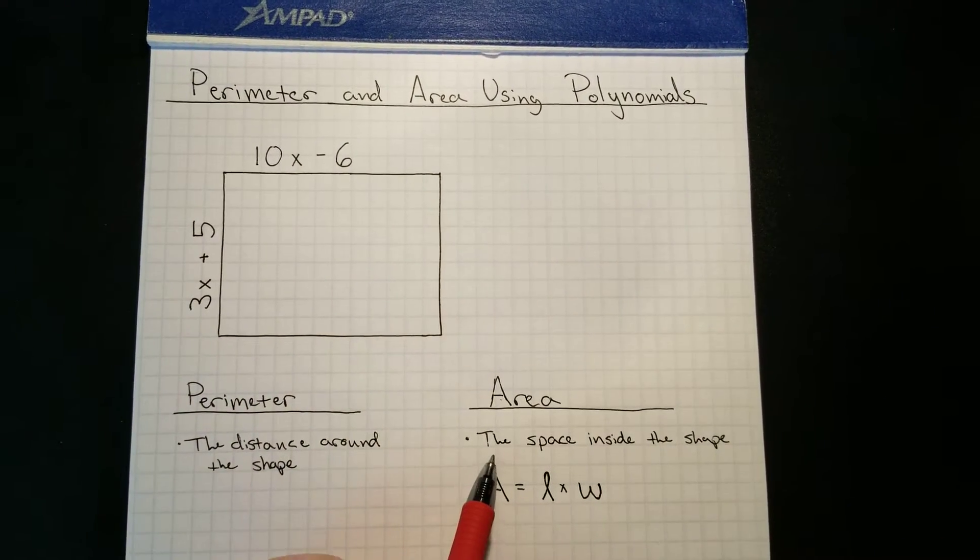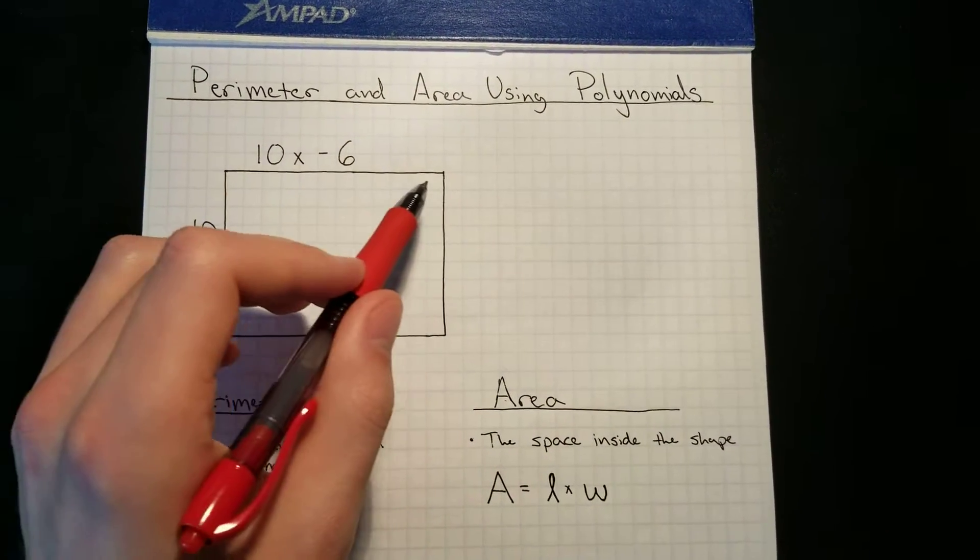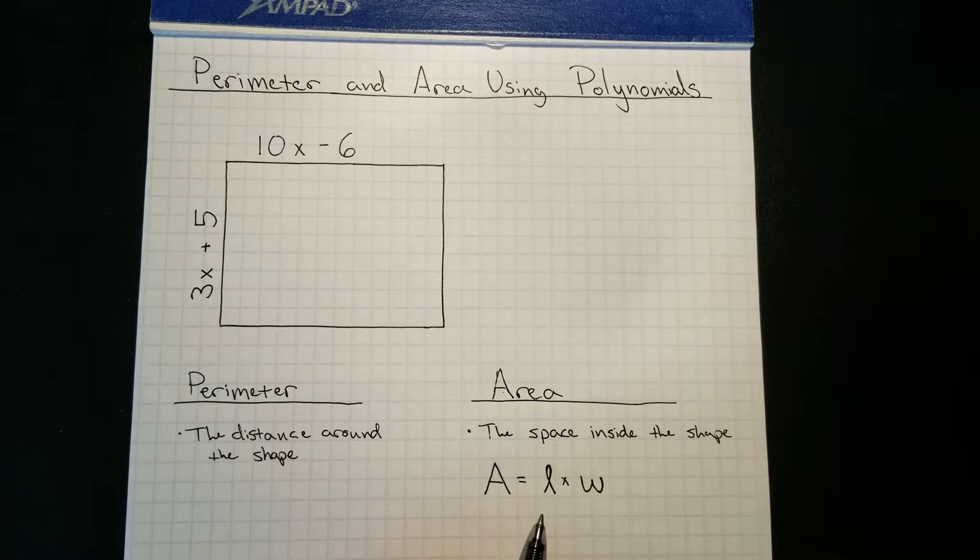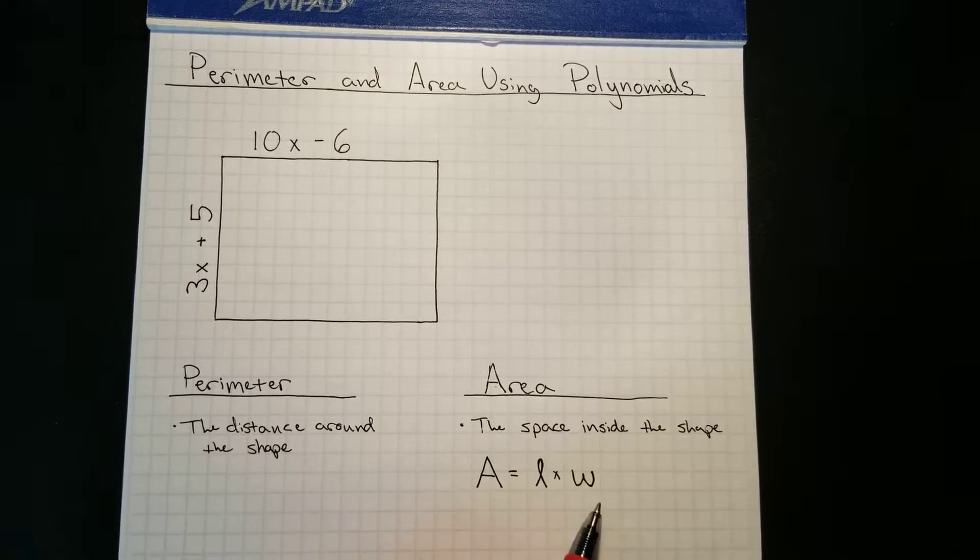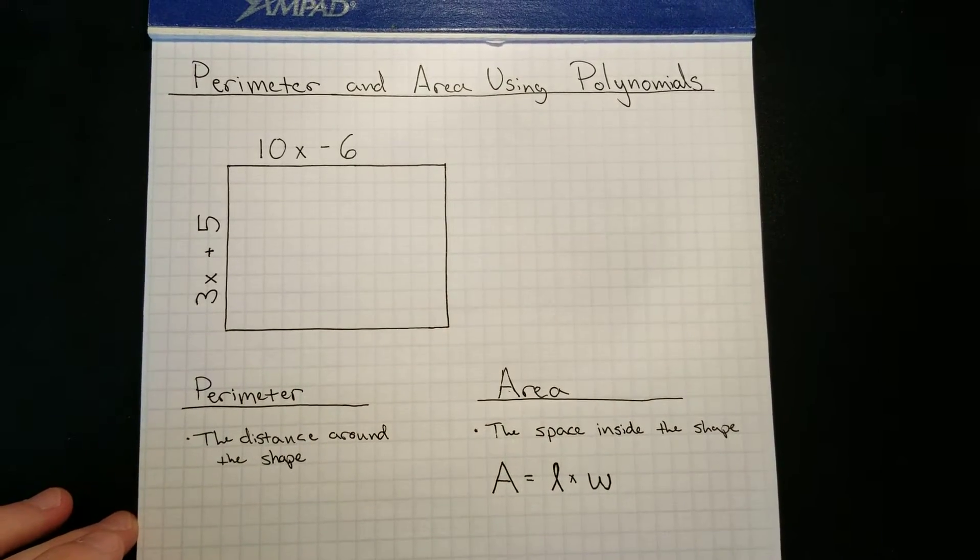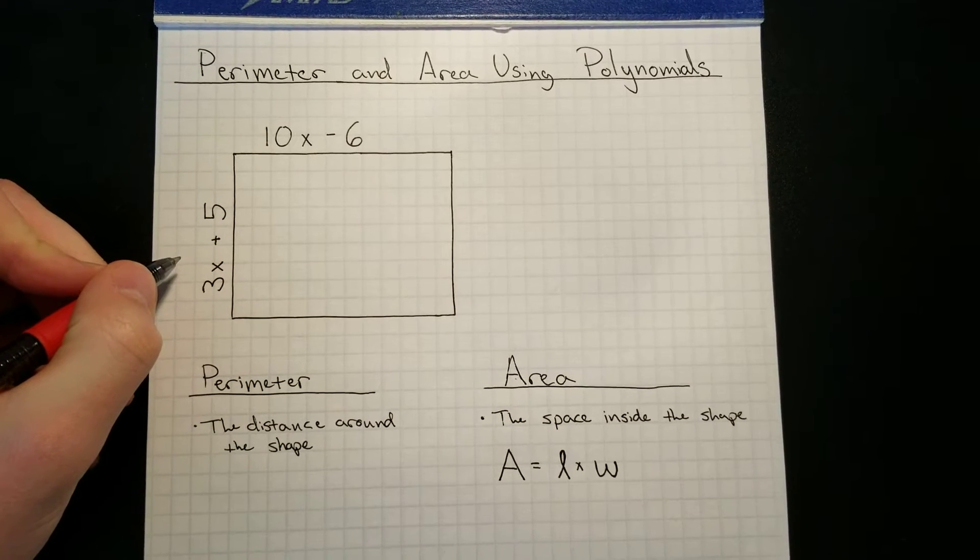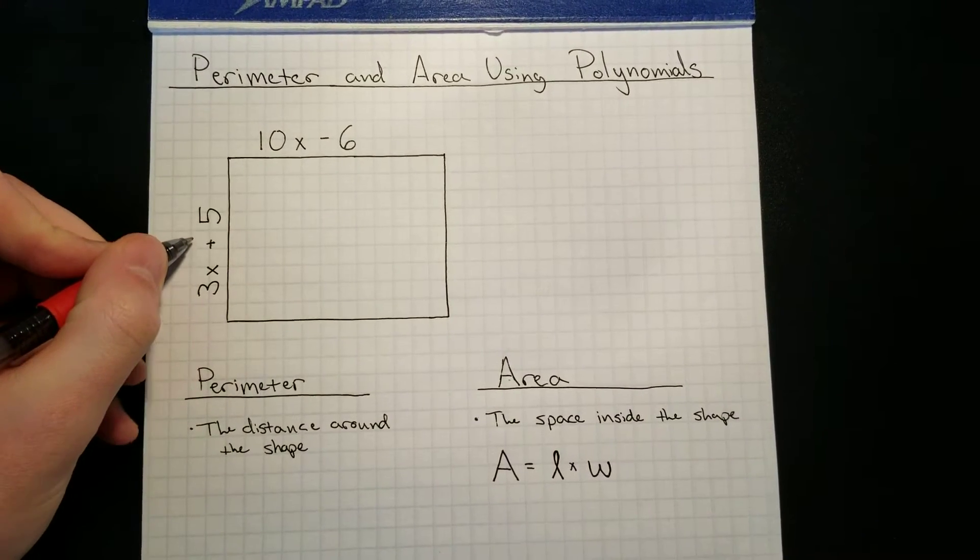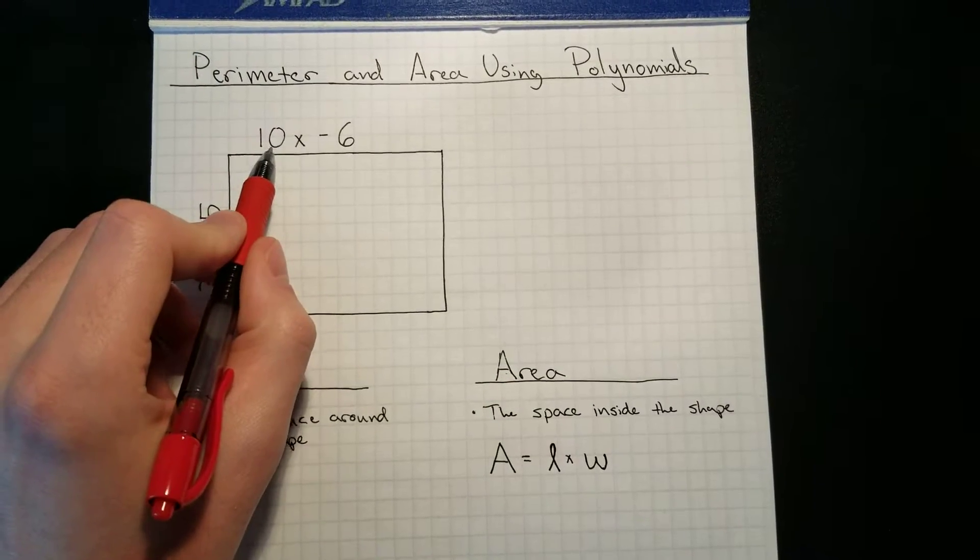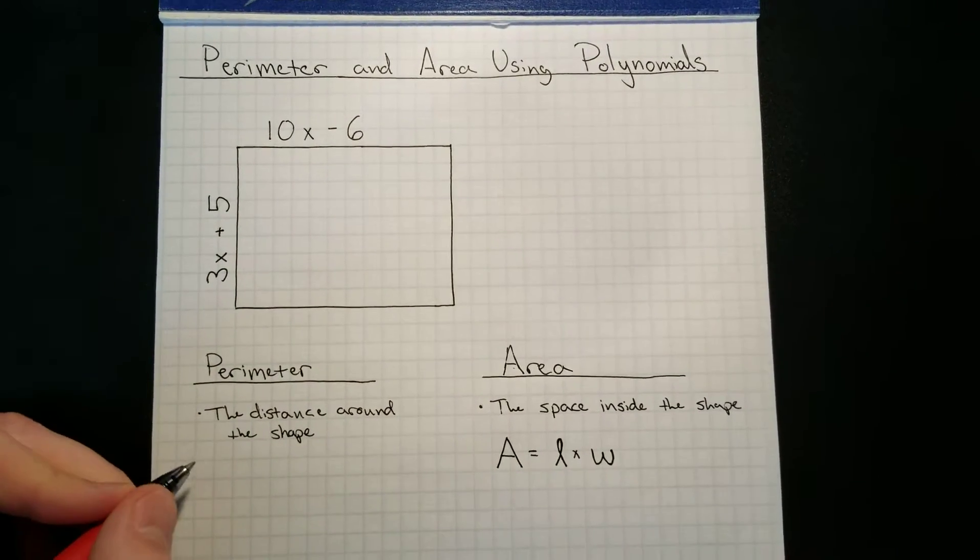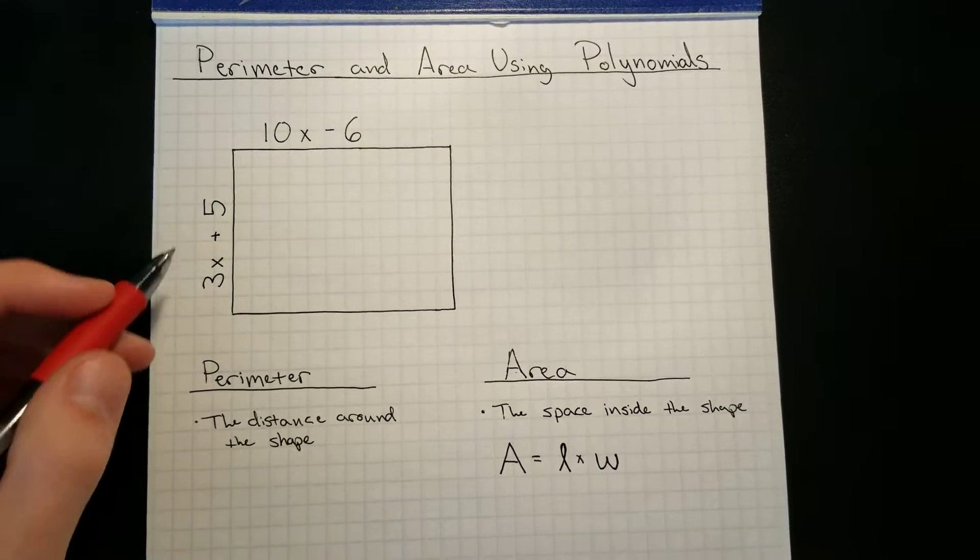And traditionally the area of a shape is usually just some number times another number. The area is equal to length times width, that's what this equation is: A equals l times w, length times width. But we're going to just be doing that with polynomials today. So for this problem we have 3x plus 5 as the length and 10x minus 6 as the width.